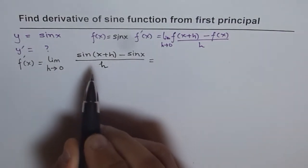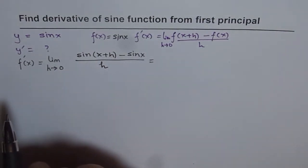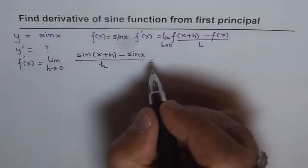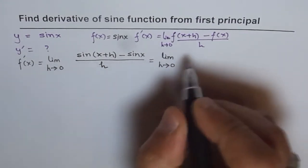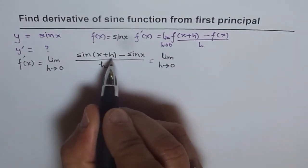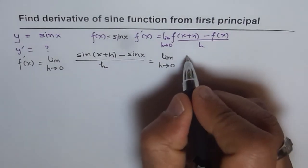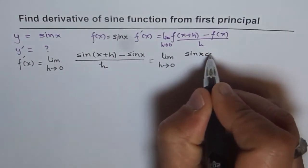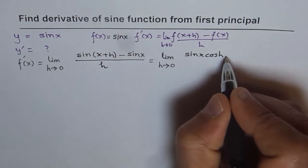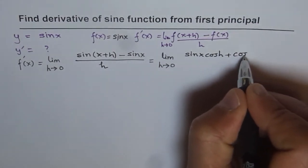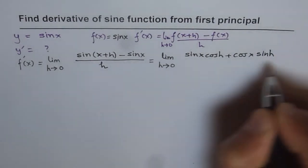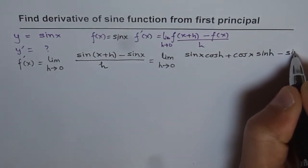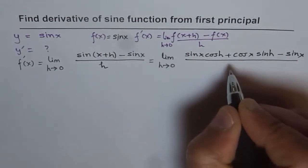Now, if you remember, what is sine x plus h? That means sine a plus b compound angle formula. We will apply that and expand this. We can write this as limit h approaches 0, and that is sine a cos b plus cos a sine b. So we will write this as sine x cos h plus cos x sine h minus sine x divided by h.